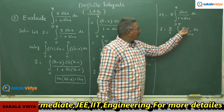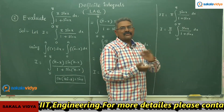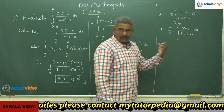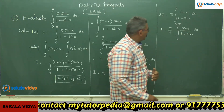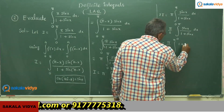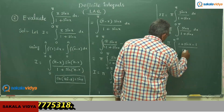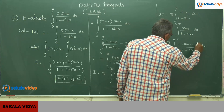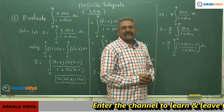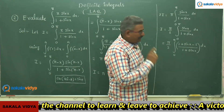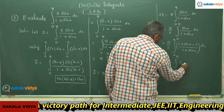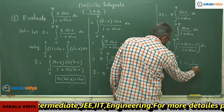Adding 1 and subtracting 1 in the numerator, sin x by 1 plus sin x can be written as (1 plus sin x minus 1) by 1 plus sin x. So I equals π/2 times integral 0 to π of (1 plus sin x) by (1 plus sin x) minus 1 by (1 plus sin x) dx. The first term simplifies to 1, giving π/2 times integral 0 to π of 1 minus 1 by (1 plus sin x) dx.